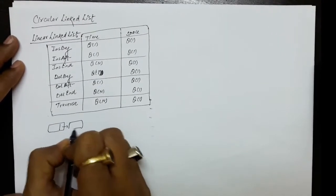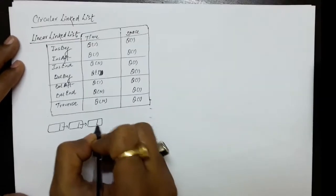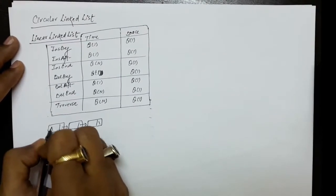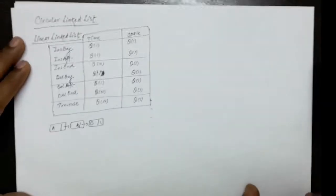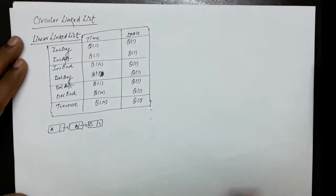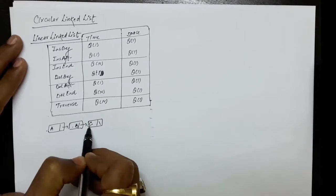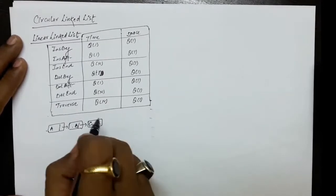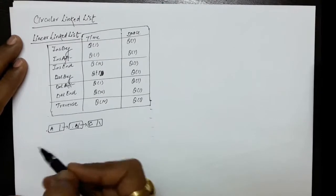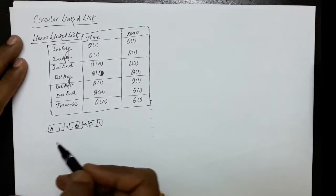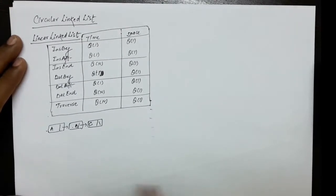The linear linked list says that if I have reached the last node while doing the traversal, there is no way I can come back. If while doing the traversal I have reached the last node, or we have crossed it, we are not able to come back to the previous node. So there is no way we can come to the previous nodes.